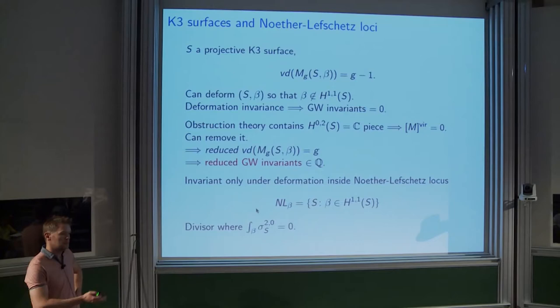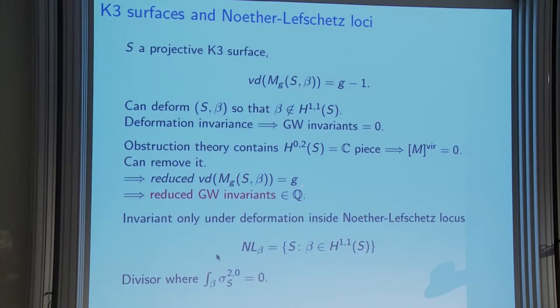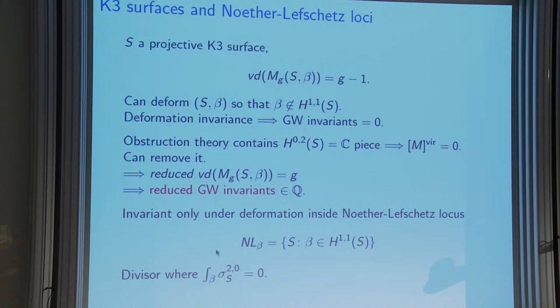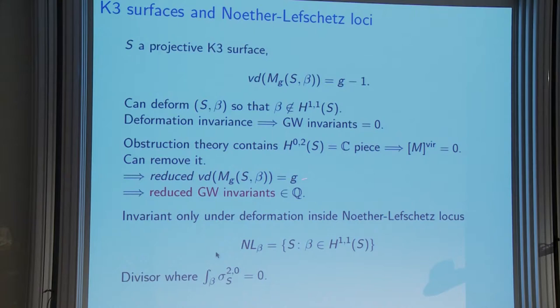Think of an elliptic K3: the elliptic fibers have genus one, giving a one-dimensional moduli space of elliptic curves. You can destroy that by deforming the K3 so the fiber class is no longer of type (1,1). While in the Noether-Lefschetz locus it's expected to be one-dimensional, and indeed there are 24 singular fibers giving genus-zero curves by normalizing nodal curves. You count them and get 24, which is one of these reduced Gromov-Witten invariants.